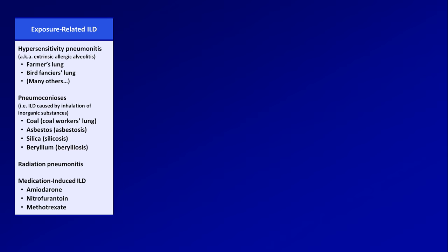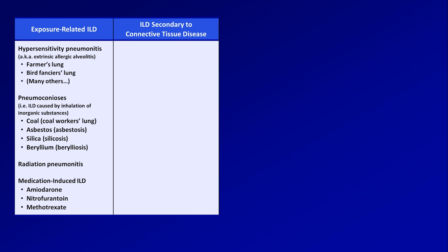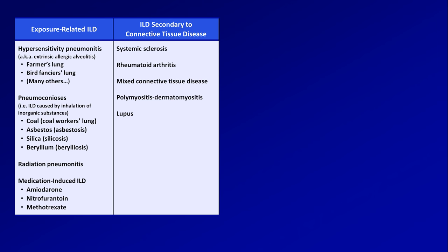In the next broad category are ILDs secondary to connective tissue diseases, which are systemic autoimmune conditions. These include systemic sclerosis, rheumatoid arthritis, mixed connective tissue disease, polymyositis and dermatomyositis, and lupus. Of these, systemic sclerosis is the most likely to cause ILD, and lupus is the least likely.